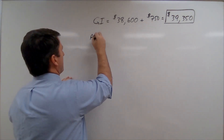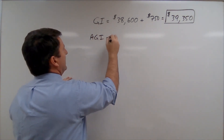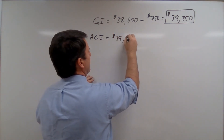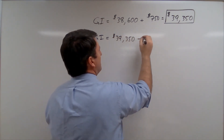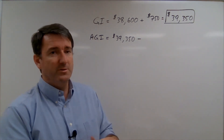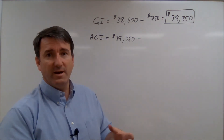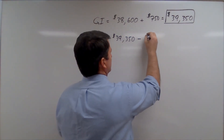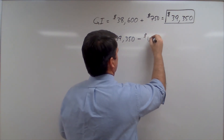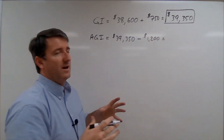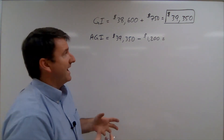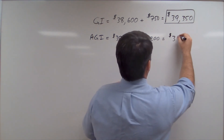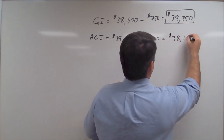Adjusted gross income is going to be our gross income of $39,350 minus the adjustments to gross income — in this case, the $1,200 she contributed to a tax-deferred savings plan. That gives us an adjusted gross income of $38,150.